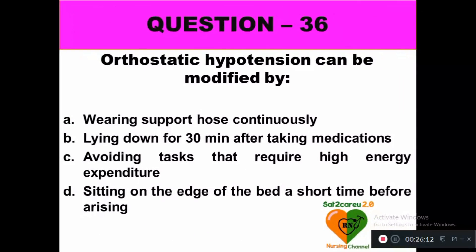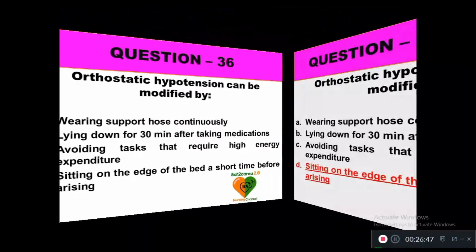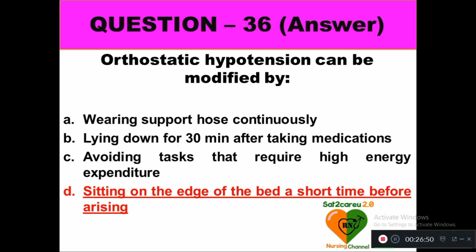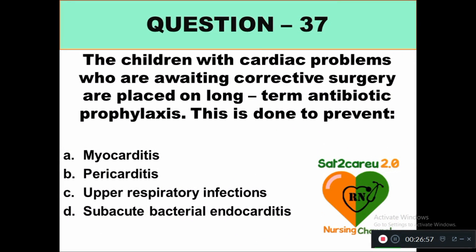Question 36: Orthostatic hypotension can be modified by: option A wearing support hose continuously, option B lying down for 30 minutes after taking medication, option C avoiding tasks that require high energy expenditure, option D sitting on the edge of the bed a short time before arising. The correct answer is option D — sitting on the edge of the bed a short time before arising can reduce the symptoms of orthostatic hypotension.